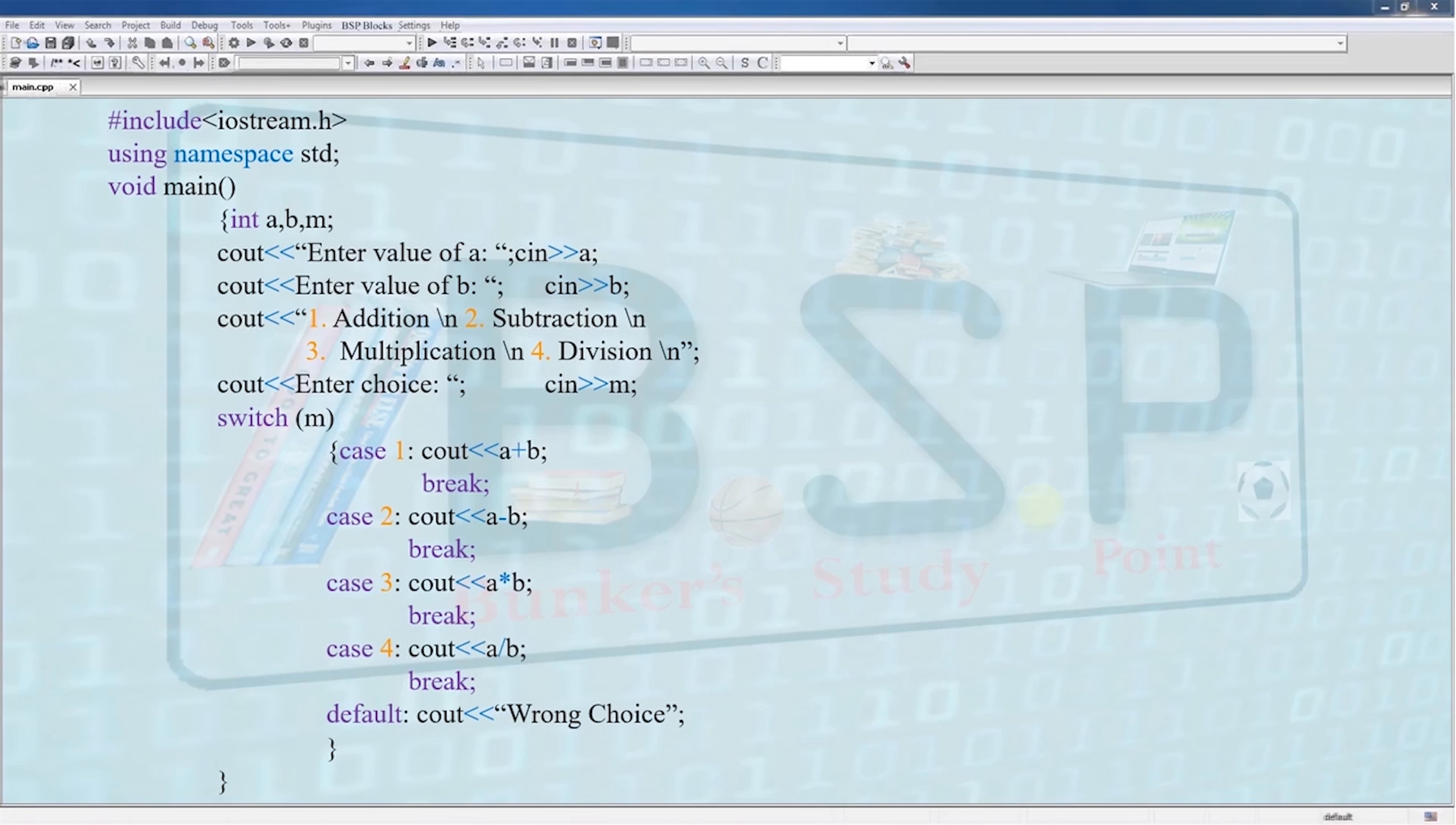And a cout statement for printing the different arithmetic operations and their corresponding choice number. Then we have switch, our main body. Inside switch parentheses we have m that will be compared. Case 1 we have cout a plus b, break. Case 2 cout a minus b, break, and so on. And at the last we have default which contains cout wrong choice.